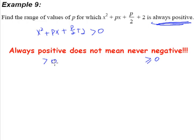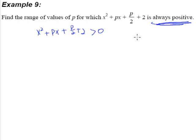The reverse is also true — always negative and never positive follow the same kind of concept and thinking. Coming back to our question, we are supposed to find the range of values of p for which this quadratic expression is greater than 0.